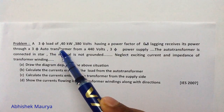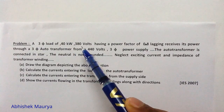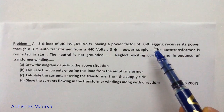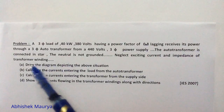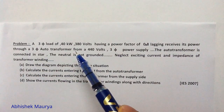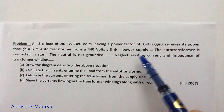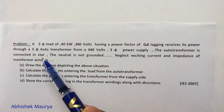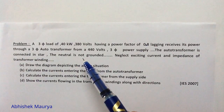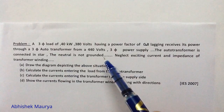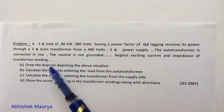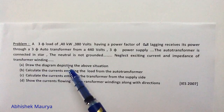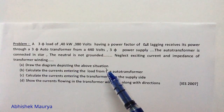In this question, there is a three-phase load of 40 kilowatts operating at 380 volts, having a power factor of 0.8 lagging, which receives its power through a three-phase autotransformer from a 440 volt three-phase power supply. The autotransformer is connected in a star, and the neutral of the autotransformer is not grounded. We have to neglect the exciting current and the impedance of the transformer winding.